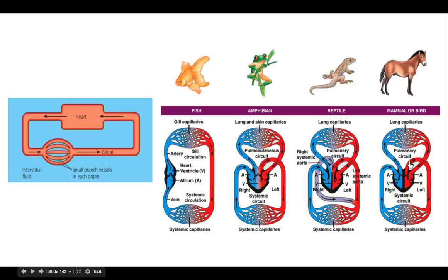All mammals have a four-chambered heart — two atria and two ventricles — which keeps oxygenated and deoxygenated blood completely separate, making this an extremely efficient circulatory system. Oxygenated blood is pumped from the lungs to the heart and then to all organs of the body, while deoxygenated blood carrying waste is carried back to the heart and into the lungs to release carbon dioxide and pick up oxygen.